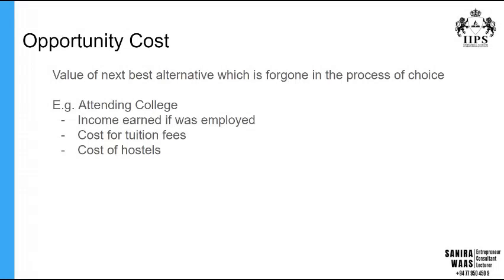When we calculate the cost of attending college, we might only include tuition fees and accommodation. But in economics, we also take the opportunity cost — because unless you were enrolled in college, you could have gone somewhere else, gotten employed, and earned a significant amount of money. So the opportunity cost is the income you missed the opportunity to earn by attending college rather than working.